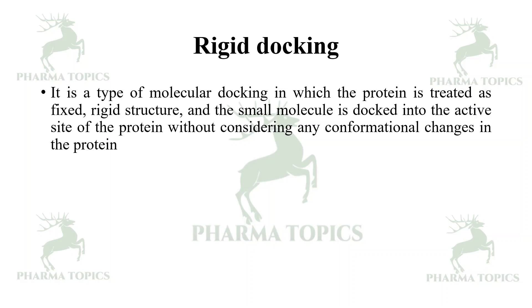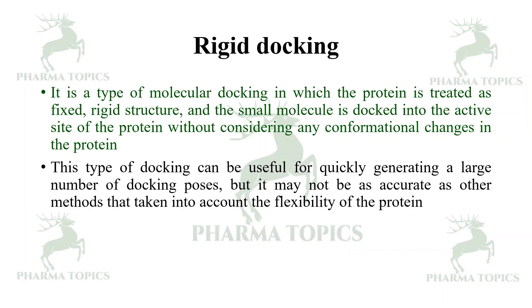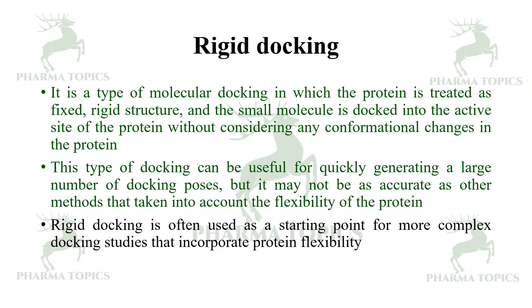Rigid docking is a type of molecular docking in which the protein is treated as a fixed rigid structure and the small molecule is docked into the active site of the protein without considering any conformational changes in the protein. This type of docking can be useful for quickly generating a large number of docking poses, but it may not be as accurate as other methods that take into account the flexibility of the protein. Rigid docking is often used as a starting point for more complex docking studies that incorporate protein flexibility.